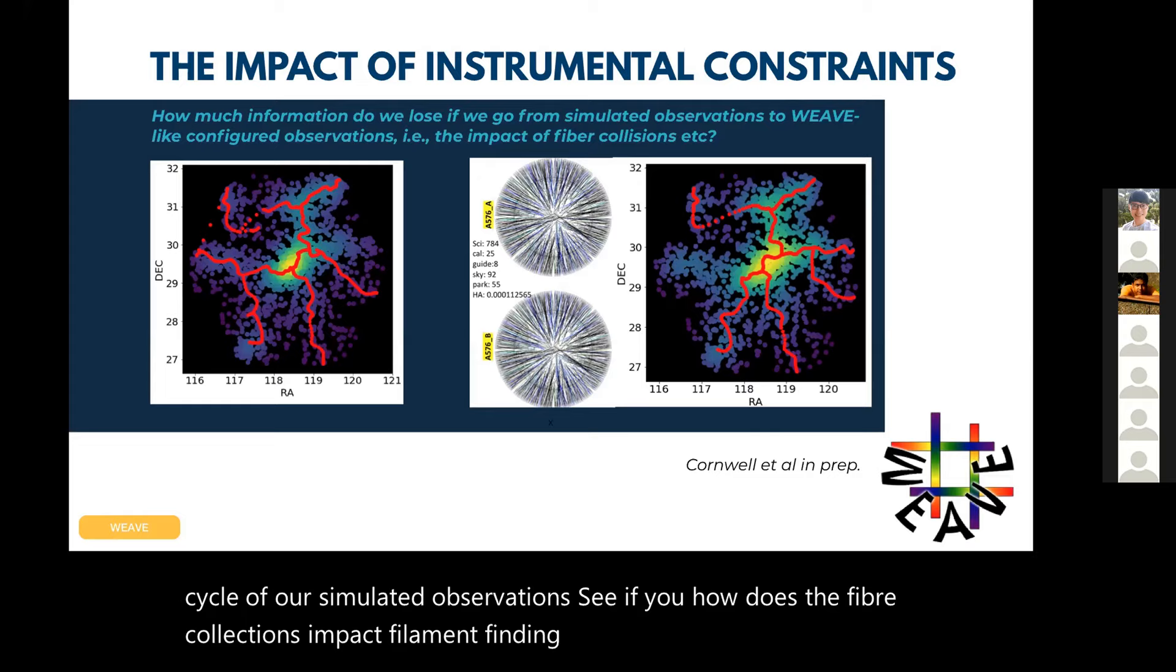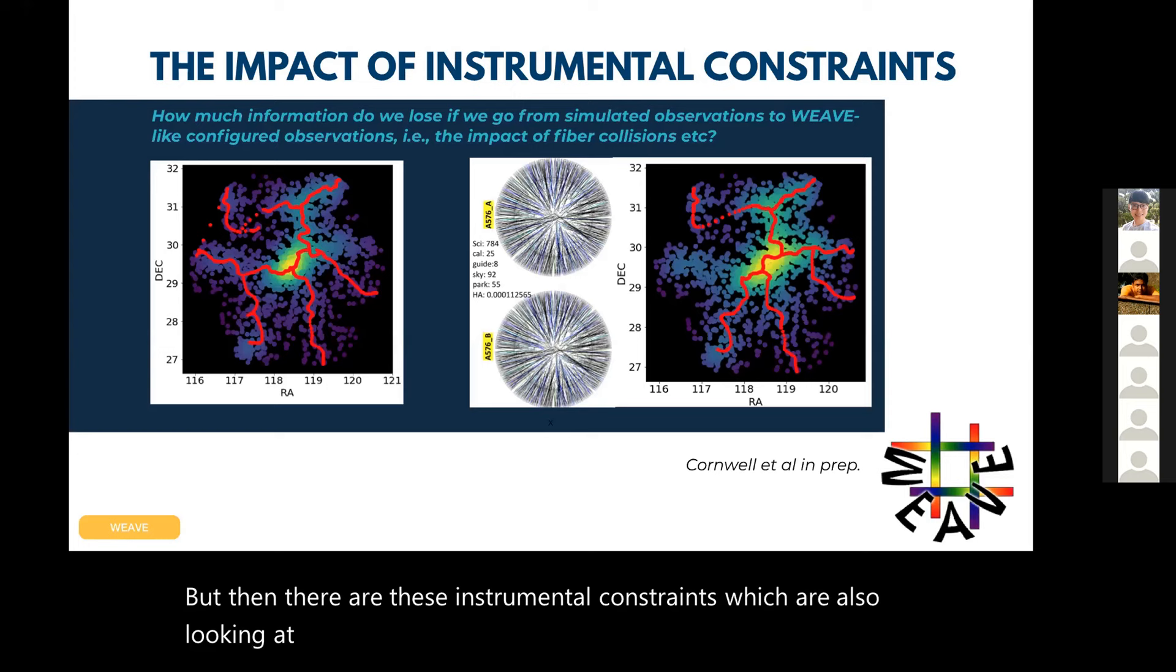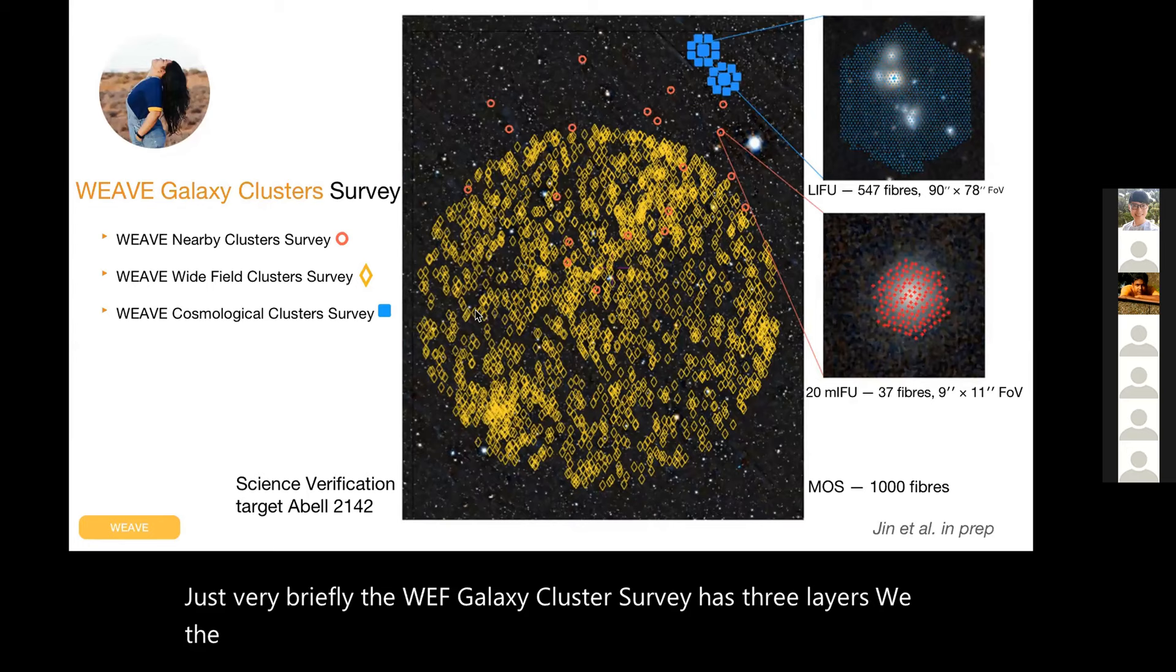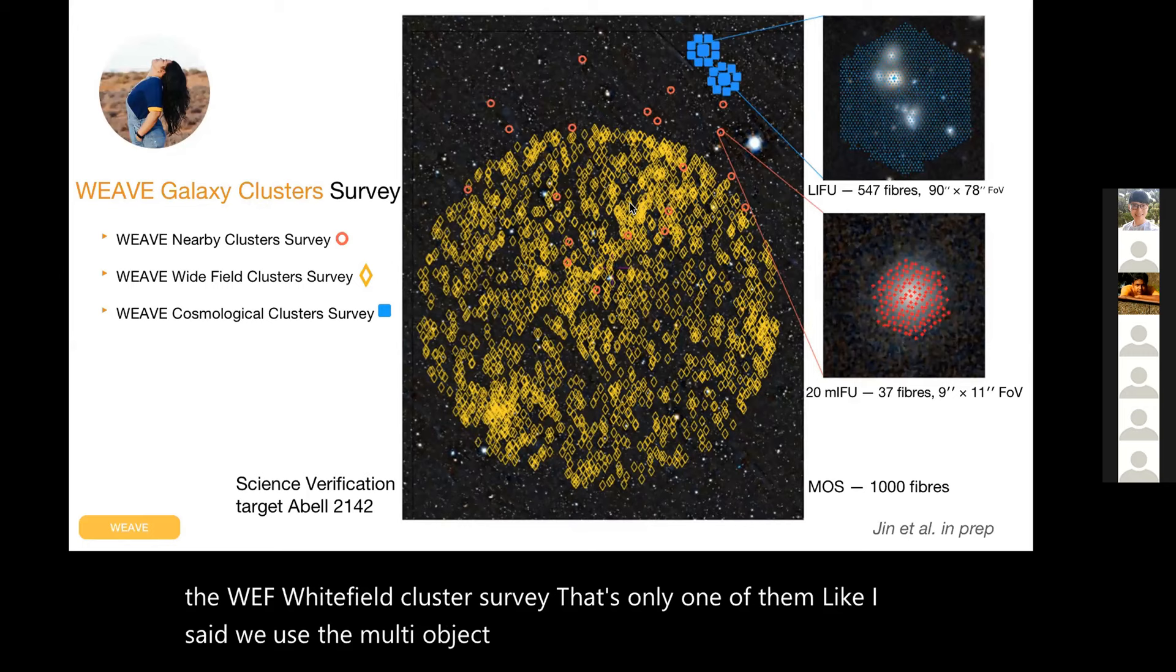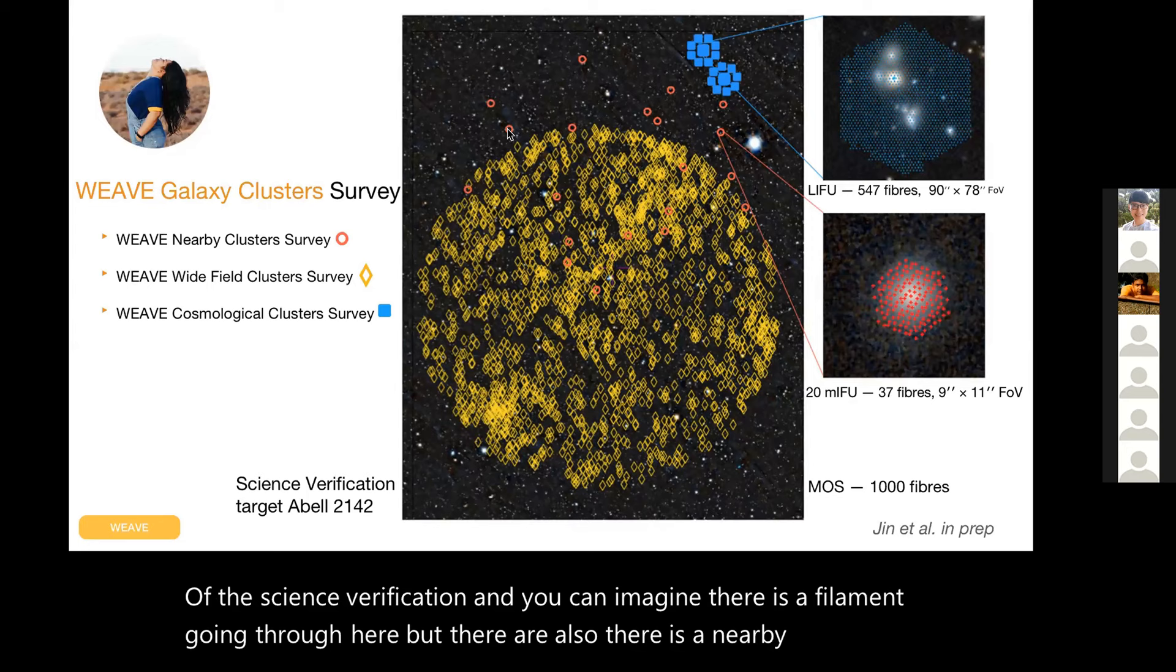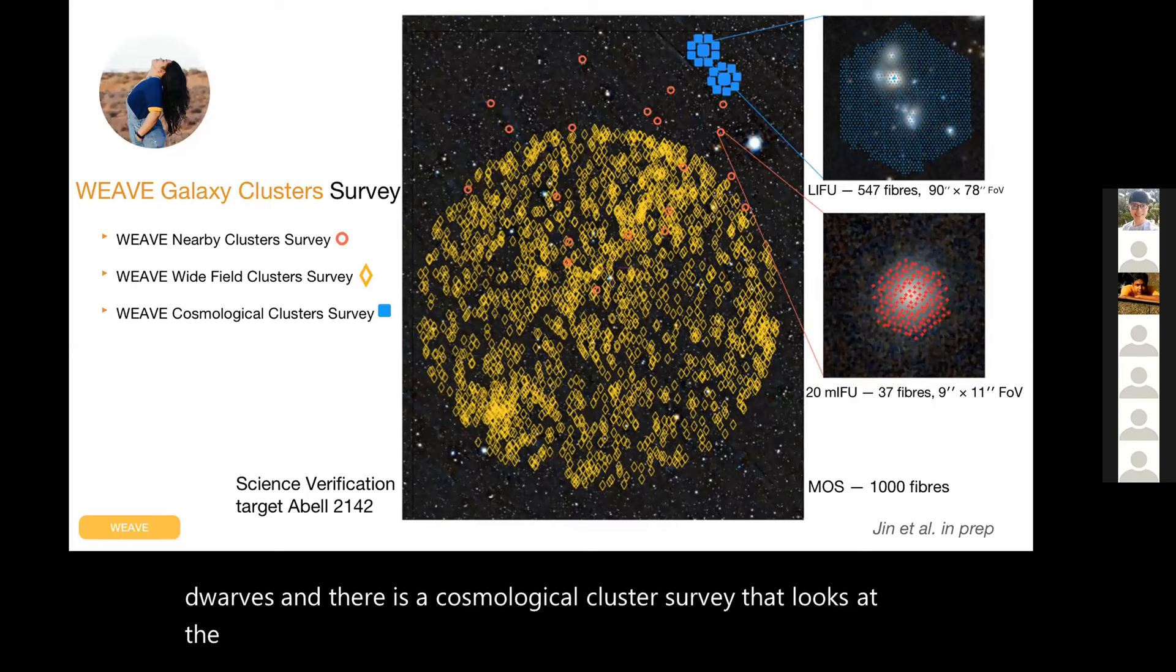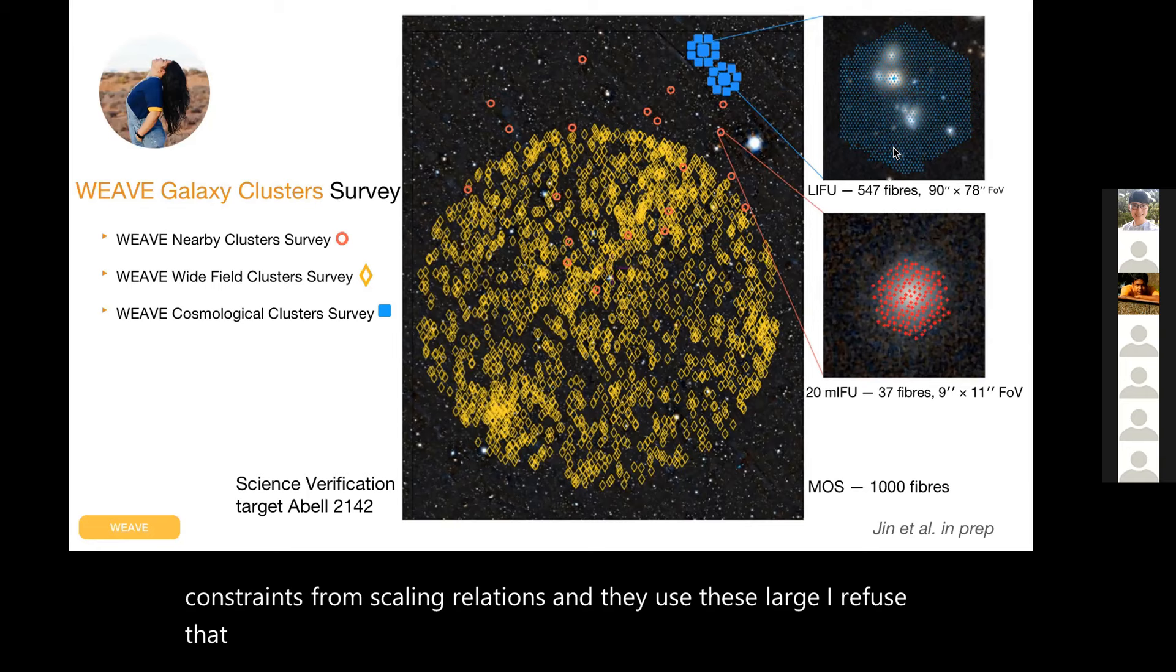The idea is that we will have good photometric redshift and color and magnitude to have high confidence of defining the volume beforehand, but then there are these instrumental constraints which we're also looking at at the moment. Just very briefly, the WEAVE galaxy cluster survey has three layers. The WEAVE Wide Field Cluster Survey that's only one of them - we use the multi-object spectrograph. Here's an example of the science verification and you can imagine there's a filament going through here. But there's also a nearby cluster survey that concentrates on dwarf galaxies and puts IFUs on dwarfs. And there is a cosmological cluster survey that looks at the evolution of central cluster galaxies and cosmological constraints from scaling relations using these large IFUs that are also part of WEAVE.